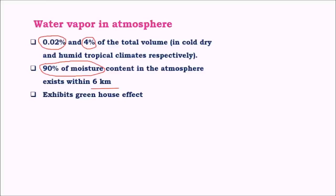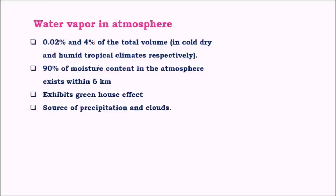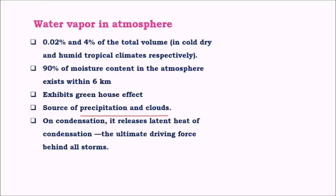Water vapour also results in various phenomena like scattering, dispersion, and even rainbows, which we will deal with when covering topics related to general science. Water vapour is an important source of precipitation and clouds, hence it helps in maintaining the hydrological cycle in the atmosphere, balancing the amount of water present in both oceans as well as on the continents.